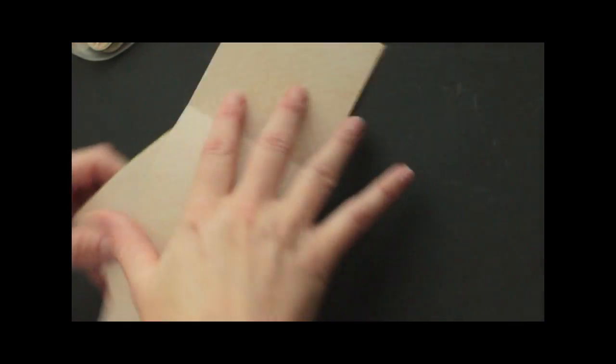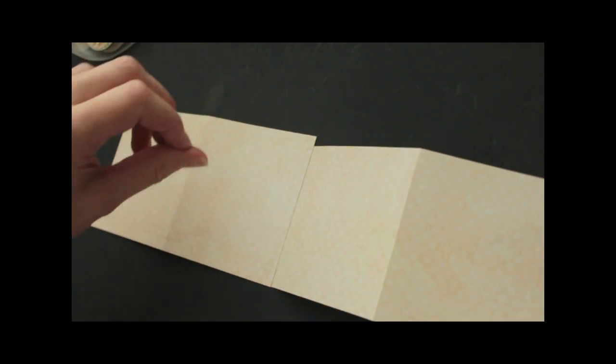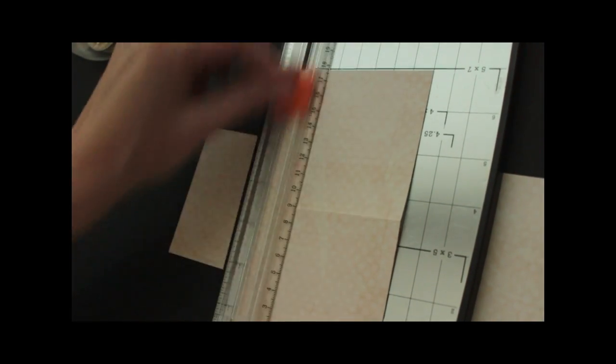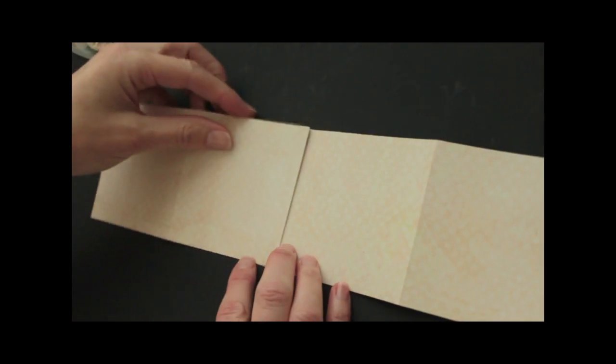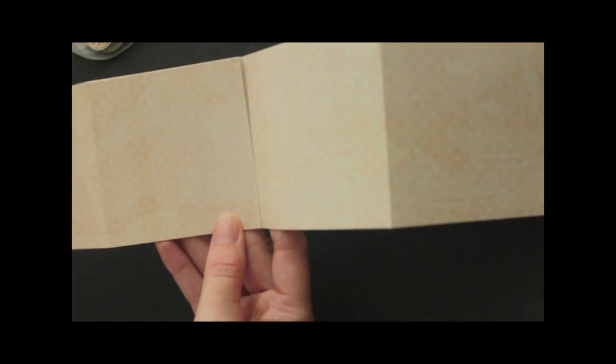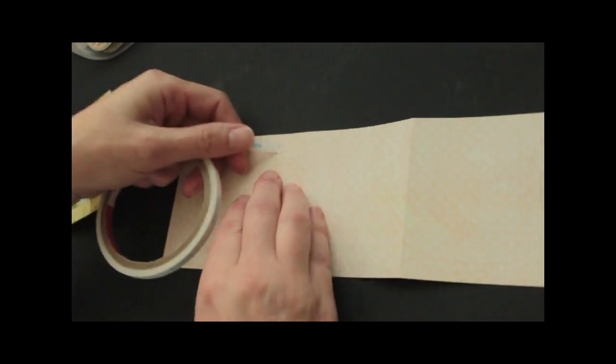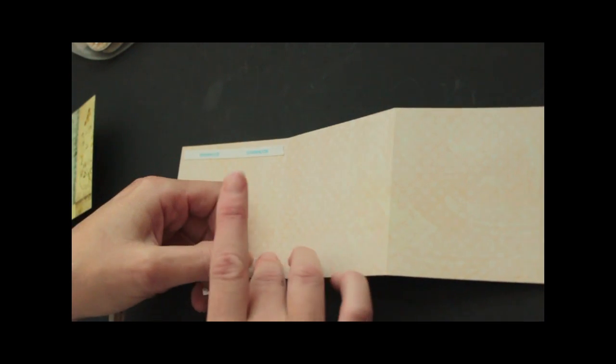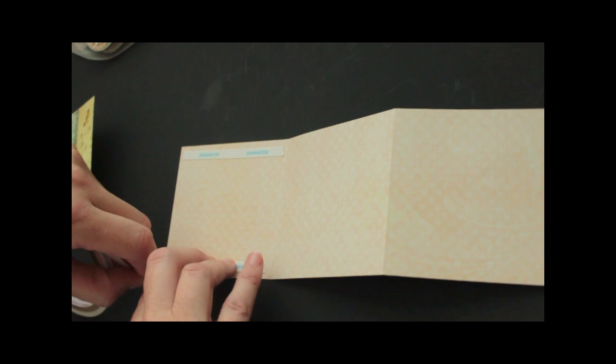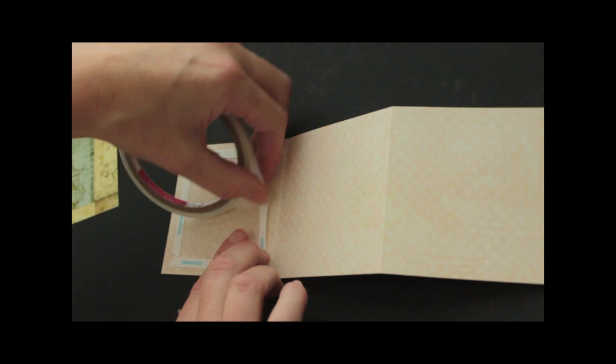I must have miscut. Sorry about that, but that's an easy fix. Just cut this a little bit smaller. And tape one side of the 7 inch piece, the smaller piece, to one of the panels on the 10 1⁄2 inch side.